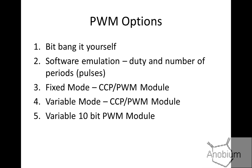There is a method called fixed mode, number three, which uses the CCP pulse width module. The PWM module is programmed by simply stating the frequency and the duty — you turn it on or you turn it off. But you can't change the frequency on the fly, and you can't change the duty, hence I've called it fixed mode. Variable mode uses the same module but you can change the frequency and the duty. And then there is a variable 10-bit pulse width module, which is specifically a module that doesn't do capture like the previous one at number four.